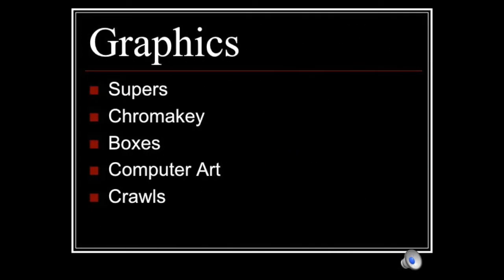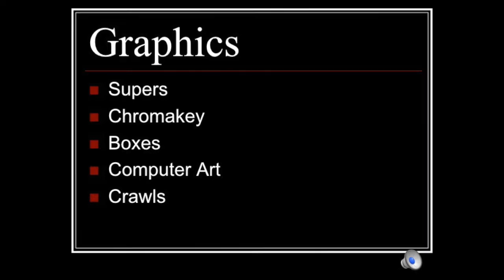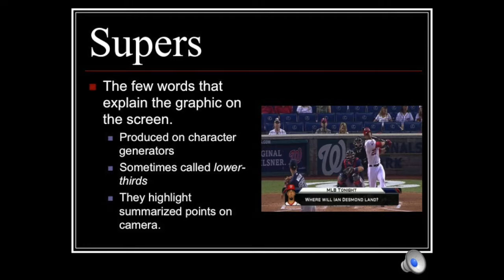Now let's talk about graphics. We're going to discuss supers, chroma key, boxes, computer art, and crawls. Super is short for superimposed, and it refers to any graphic or text that is laid over the video. We do this in our live productions with lower-third graphics and scoreboards. In a studio setting, they are the few words that explain the graphic on the screen, produced on character generators and stored in computer memories. These are often called lower-thirds because that is the most common type in studio productions.